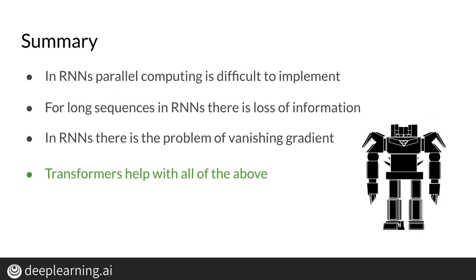In summary, RNNs have some problems that come from their sequential structure. With RNNs, it is hard to fully exploit the advantages of parallel computing, and for long sequences, important information might get lost within the network, and vanishing gradient problems arise. But fortunately, recent research has found ways to solve the shortcomings of RNNs by using transformers. Transformers are a great alternative to RNNs that help overcome these problems in NLP and in many fields that process sequence data. Now you understand why RNNs can be slow and can have problems with big contexts — these are the cases where transformers can help. Next, I will show you concrete examples of tasks where the transformer is used.